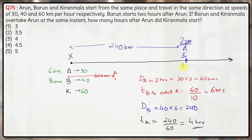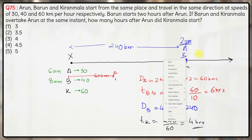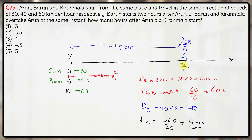Kiranmala also has to reach the meeting point at 2 p.m. itself, because Barun and Kiranmala both overtake Arun at the same instant. That means Kiranmala reaches there at 2 p.m. and takes 4 hours. So Kiranmala would have started 4 hours before 2 p.m., which is 10 a.m.